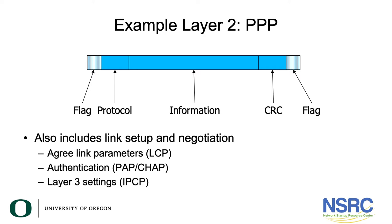A PPP frame looks like this: there's a flag which marks the start of the frame — a special pattern of bits — then a field that contains the protocol, indicating what Layer 3 information is being carried. Then there's an information field with the actual data you want to carry. Then there is a CRC — a Cyclic Redundancy Check — used to detect transmission errors, and then a flag at the end to indicate the end of the frame. The CRC is a pattern of bits calculated across the whole frame. The transmitter calculates it and puts it into the frame; the receiver does the same calculation and checks if they get the same result. If they get a different CRC, it means the data was corrupted and the frame can be discarded.